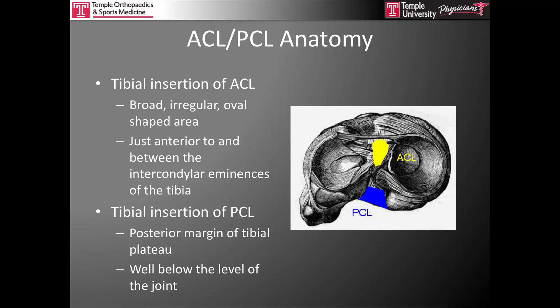The tibial insertion of the anterior cruciate ligament is a broad, irregular, oval-shaped area that sits between the intercondylar eminences of the tibia, just behind the inner meniscal ligament. The posterior cruciate ligament inserts more posteriorly, just off the edge of the tibial plateau, and actually inserts well beneath the level of the tibial plateau, approximately one centimeter below the joint line.